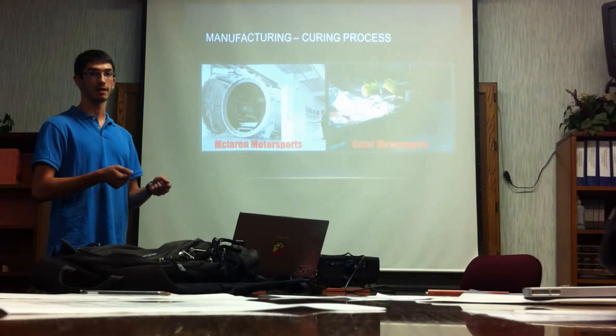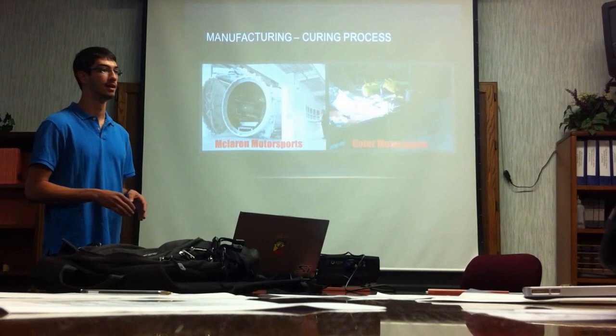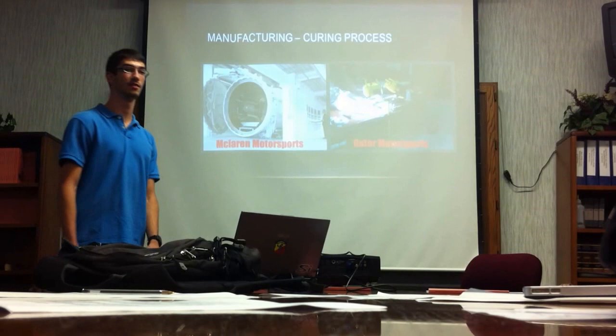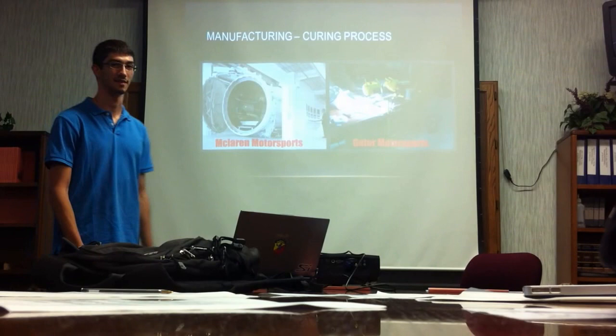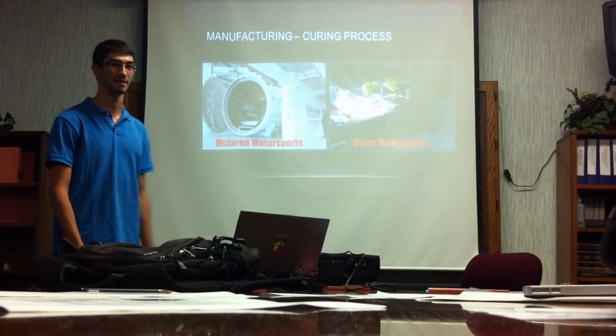To cure this stuff and make it something useful, you have to bake it at high temperatures to cure the resin and apply high pressure to get all the air out. Here you see McLaren Motorsports' autoclave — it's about a 10-foot diameter cylinder where they can put an entire car chassis in and bake it at high temperature. It's sealed so they can pressurize it. We have a similar setup using a heat lamp and a plastic bag, but the end goal is the same.